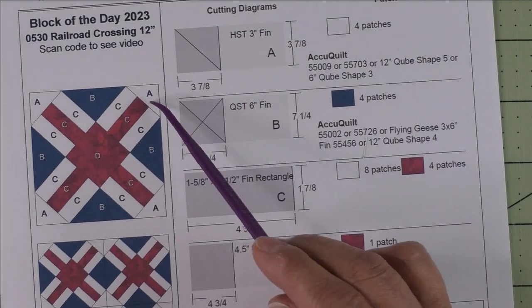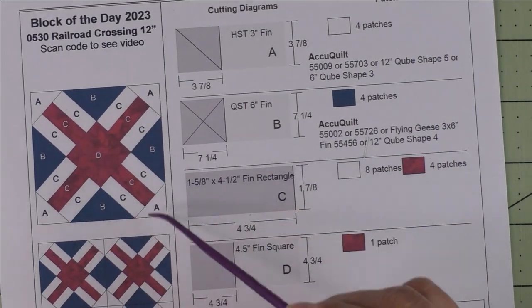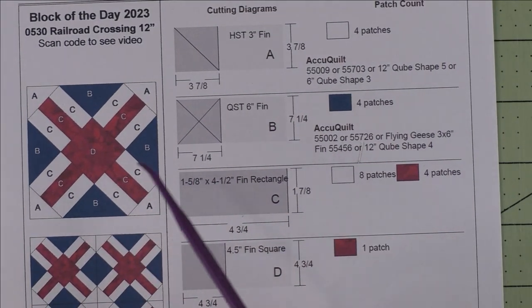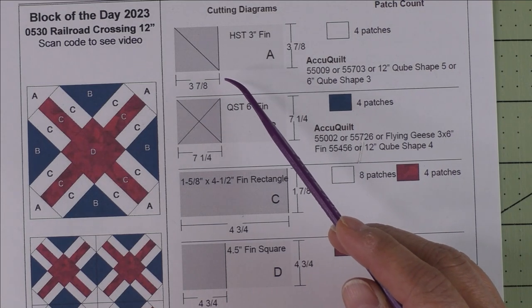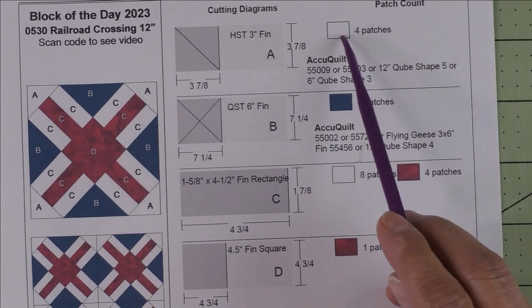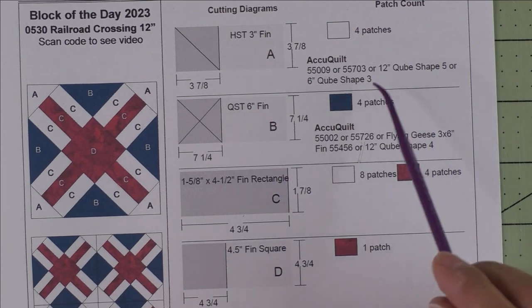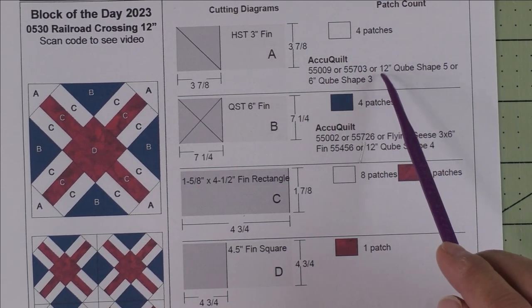So we won't be sewing them into half square triangles—we'll leave them as patches. We'll need four for the background fabric. Here are the AccuQuilt dies if you're using AccuQuilt. These will cut this shape.